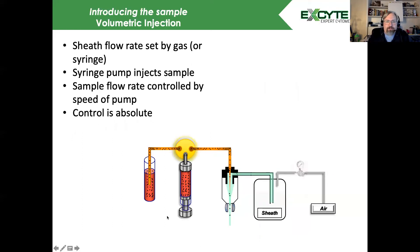To get better, more absolute control, we use things like volumetric injection-based systems. In this case, the sheath fluid flow is set by either a gas or syringe. Here we're showing it's being set by a pump. The sheath fluid is again pressurized, establishing our laminar flow.